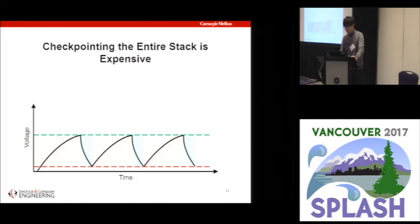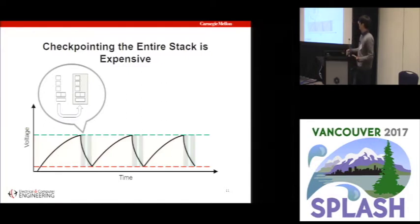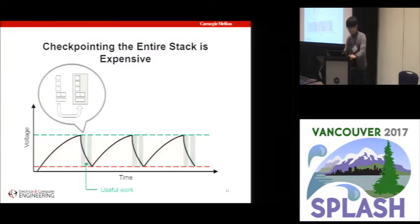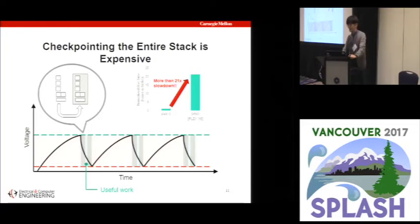But the problem is saving the entire memory and register file all the time is really expensive — the stack can be arbitrarily large. And as we've seen, if the overhead is large, the useful work you can do becomes really tiny. The previous checkpoint-based system Dino shows more than 20x slowdown compared to a plain C program, so this is not what we want.